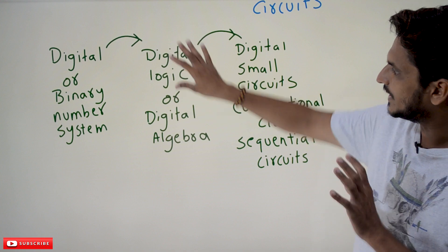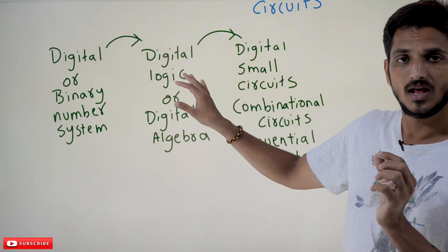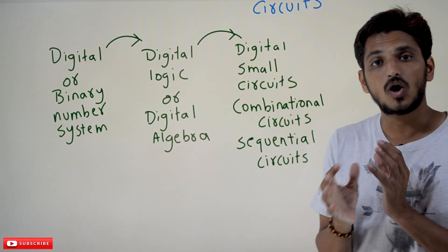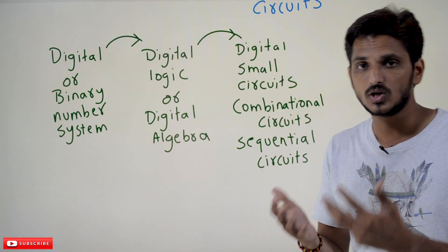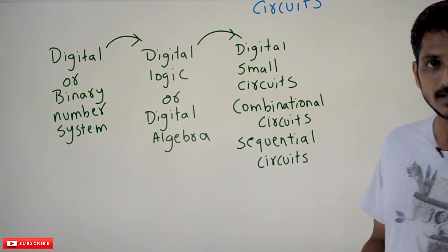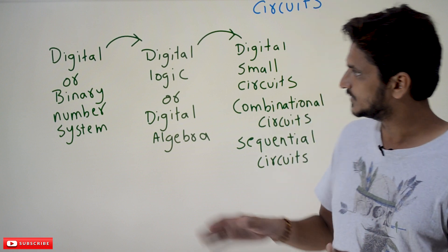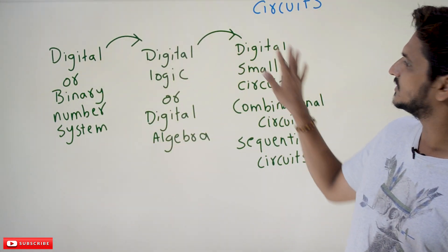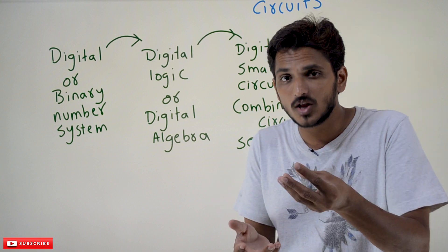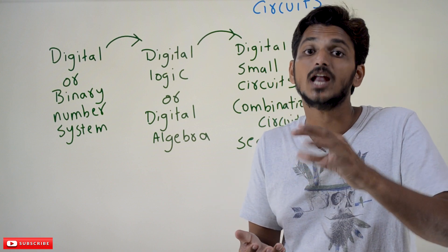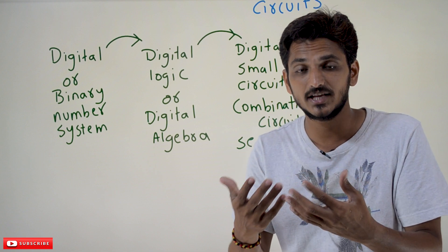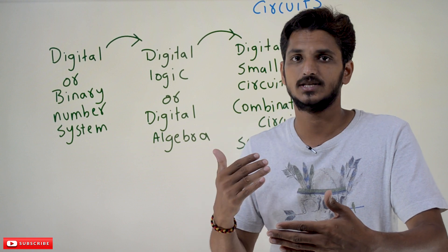Once you have the basic logics about digital, using those basic logics you are going to design small circuits. Those circuits we call combinational circuits or sequential circuits. After completion of these subjects, you are going to get all three of these concepts. At the end of the subject, you will be able to design small combinational and sequential electronic circuits — that is the level of understanding you get after completion of digital logic design.